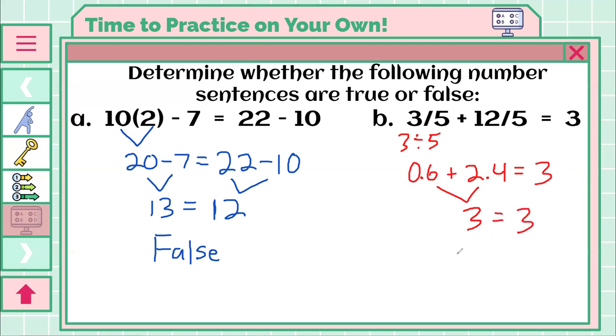Meaning you saw your 3 equals 3, and you had a true number sentence, then you found this out correctly. Do take note, you could have also done this by leaving it as fractions. Because if you did 3 fifths plus 12 fifths, you would get 15 fifths. And 15 fifths is the same as 3. You get the same answer.